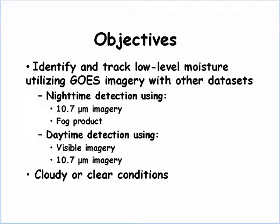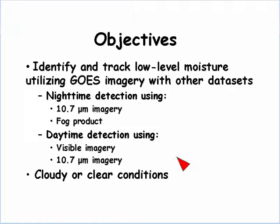Our objectives are to identify and track low-level moisture utilizing GOES imagery with other data sets during various situations: at nighttime using the 10.7 channel as well as the fog products, and during the daytime using the higher-resolution visible imagery — and you can also still use the 10.7 imagery as well. We'll also look at cloudy versus clear conditions and show some examples of that.